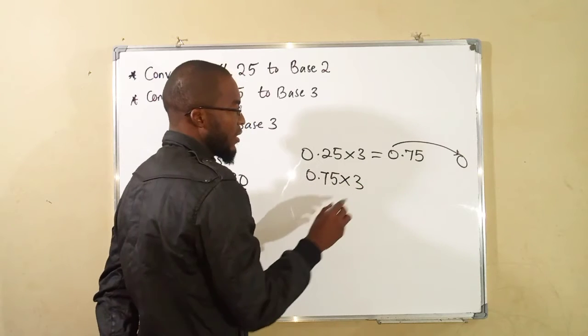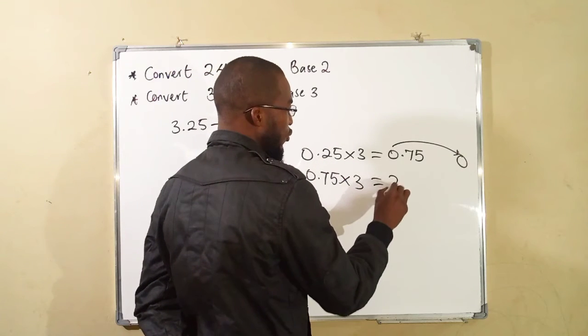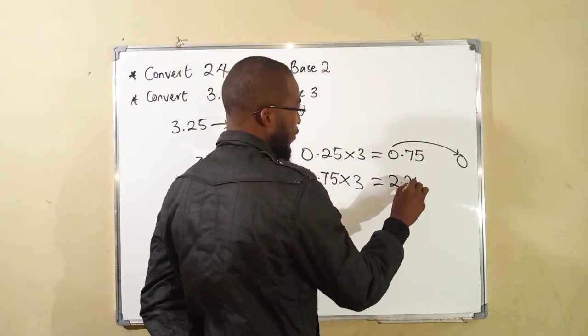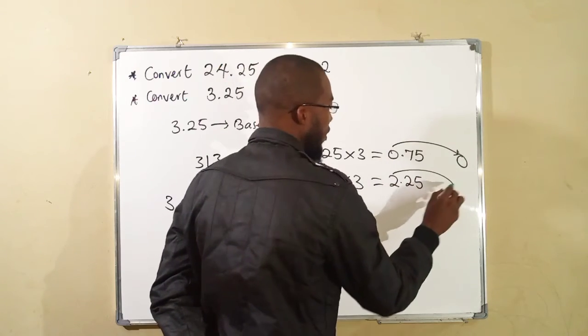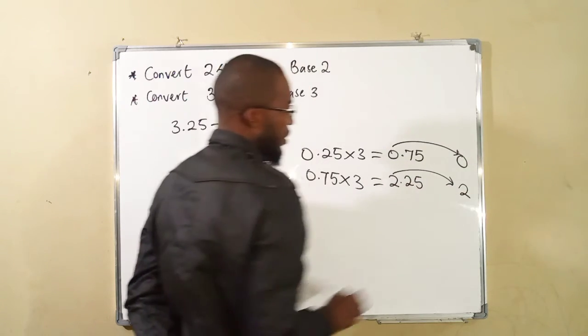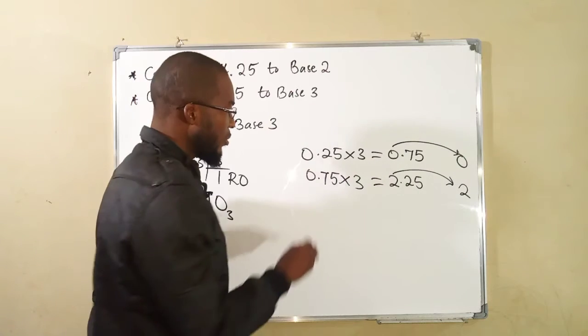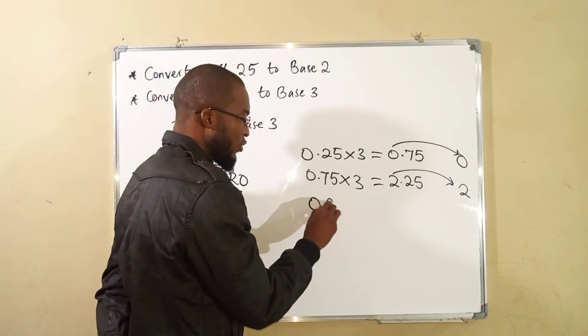Multiply it by 3 again. This will be equal to 2.25. Take away the whole number, which is 2. Taking away the whole number 2, you will be left with 0.25.